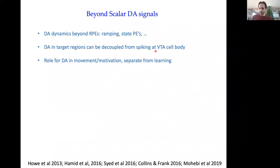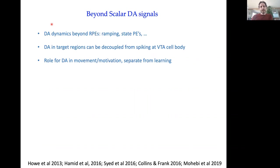Today's talk is trying to go beyond the sort of scalar idea that there's a single dopamine signal in dopamine neurons. We want to bring the theory up to date by talking about the dynamics that go beyond reward prediction errors.